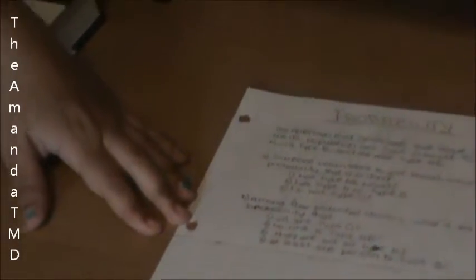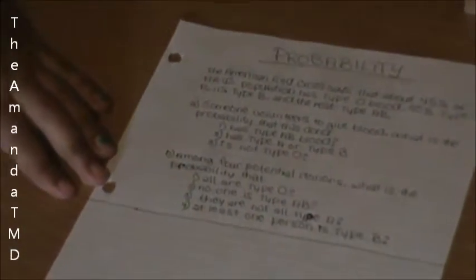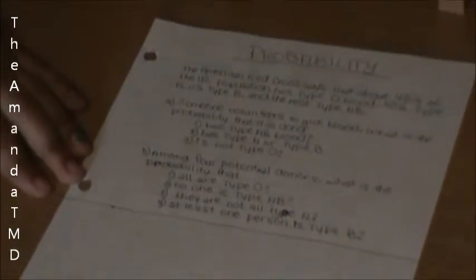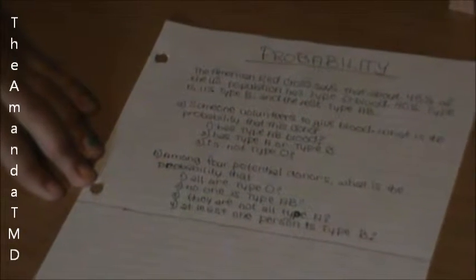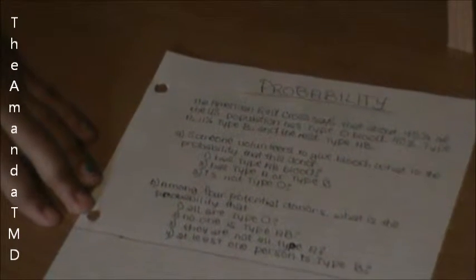Part A says, someone volunteers to give blood. What is the probability that the donor has type AB blood, has type A or type B blood, or is not a type O?